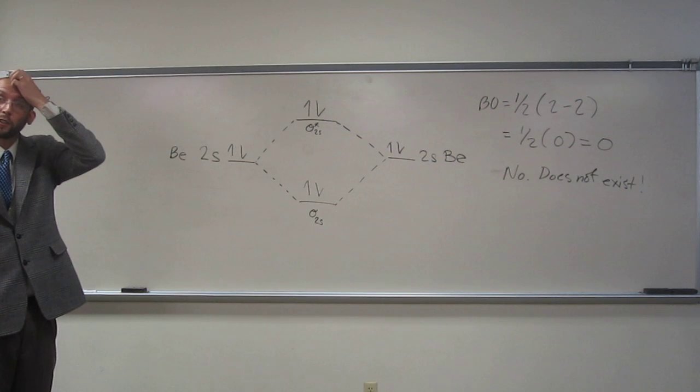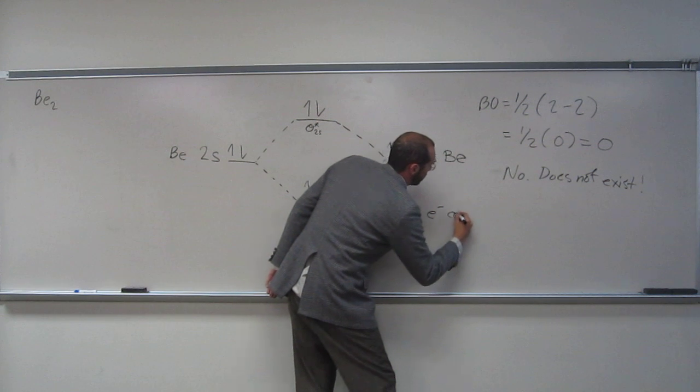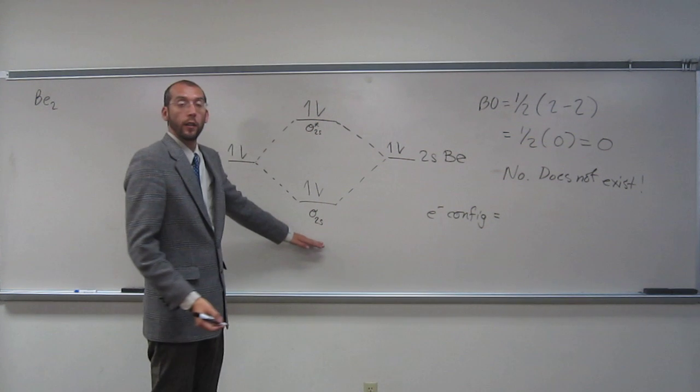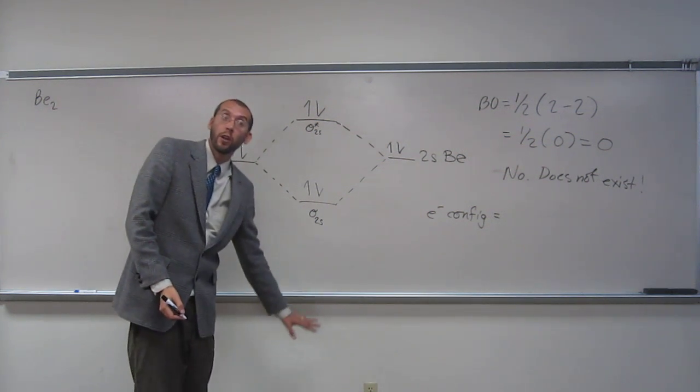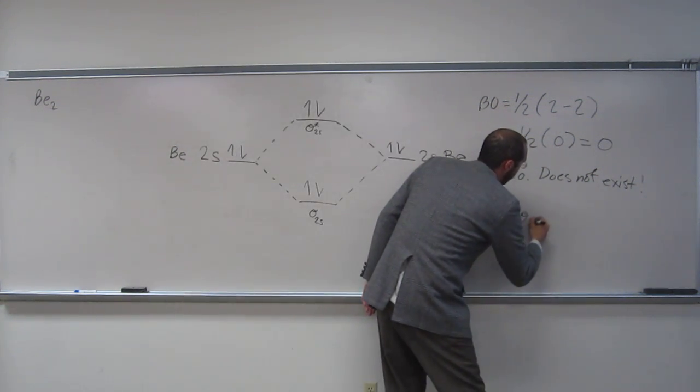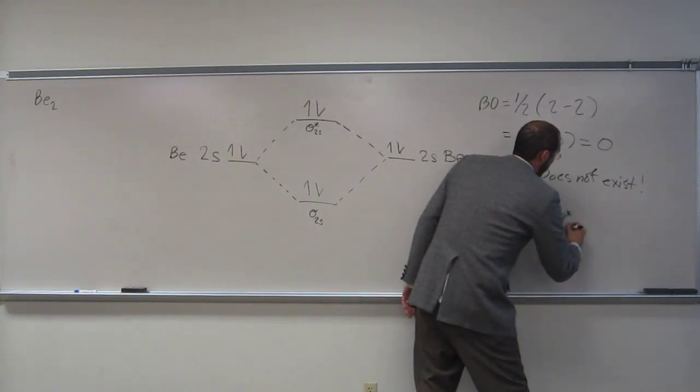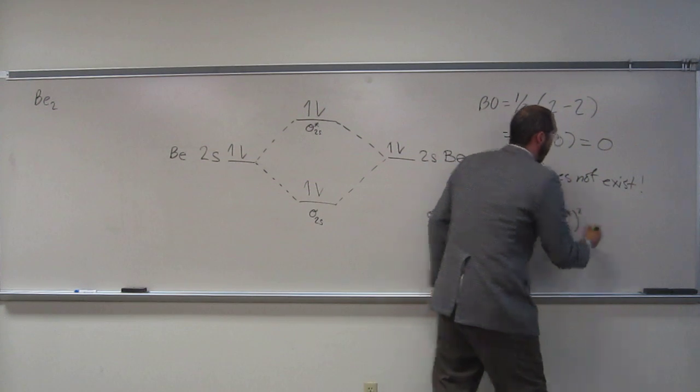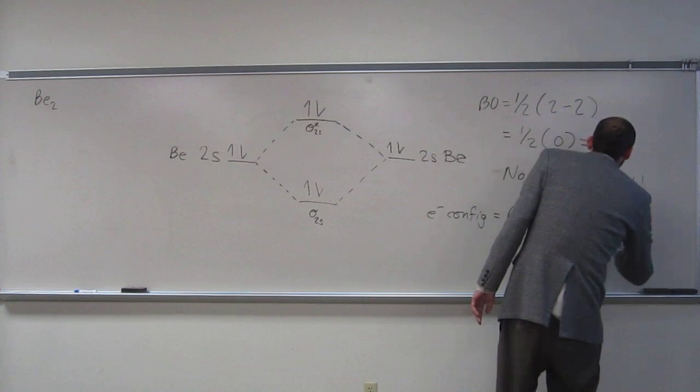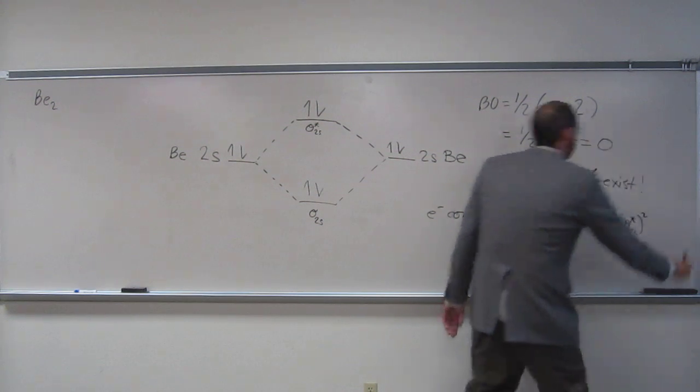So let's write the electron configuration for this theoretical molecule. The entire electron configuration also has that 1s stuff in it. So sigma 1s², sigma star 1s², because both of those inner orbitals are filled up. And then, what do we have? Sigma 2s², sigma star 2s².